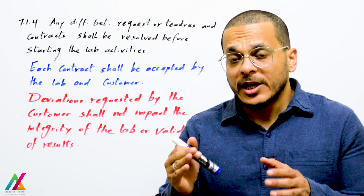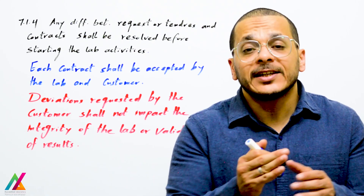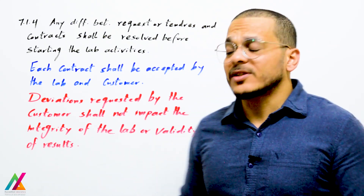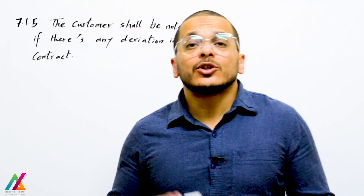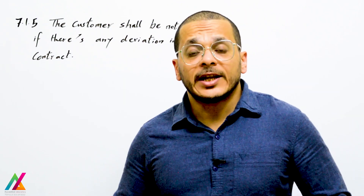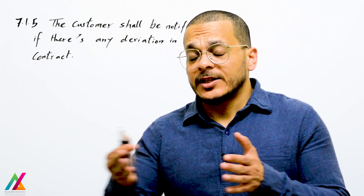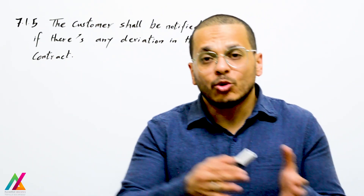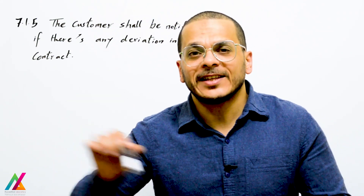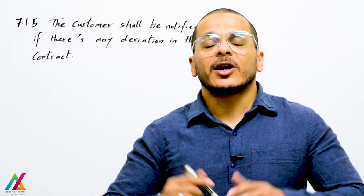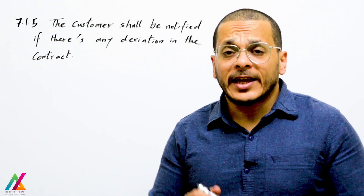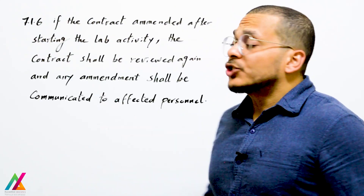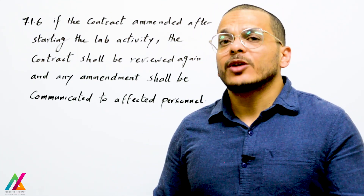If there is any deviation requested by the customer, it shall not affect the integrity of the lab or validity of results. Any deviation that affects the lab activity or integrity of results shall not be accepted by the lab. The contract will be signed by both the customer and the lab. The customer shall also be notified if there is any deviation in the contract by the lab. Any deviation that affects the integrity of results shall not be accepted, and the lab shall convince the customer of this.